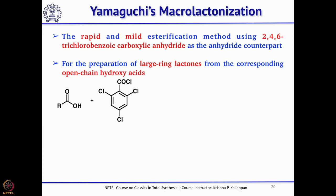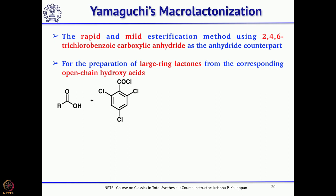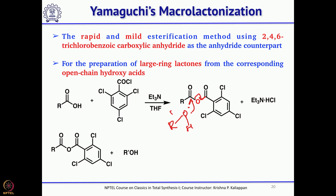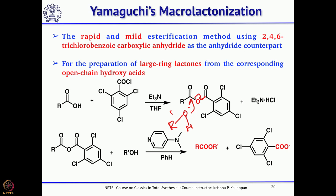What is Yamaguchi's macrolactonization? If you have a carboxylic acid and treat it with 2,4,6-trichlorobenzoyl chloride, it forms a mixed anhydride. Upon treatment with an alcohol, the alcohol attacks the less hindered carbonyl group and the trichlorobenzoate leaves. That is how esters are formed using Yamaguchi's method.